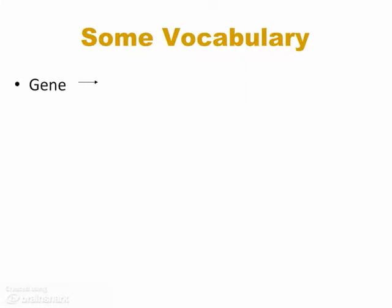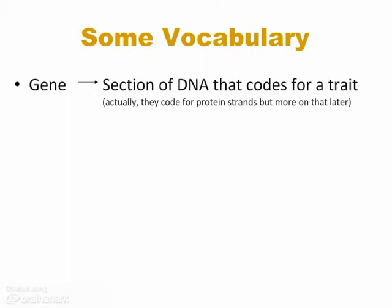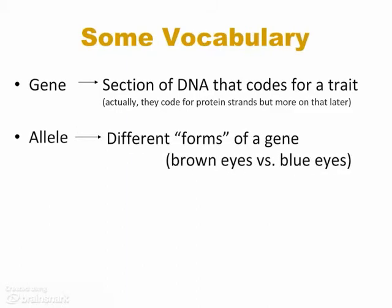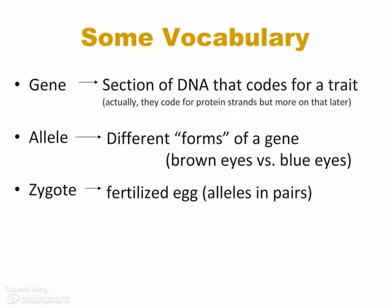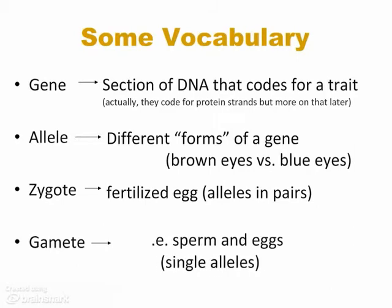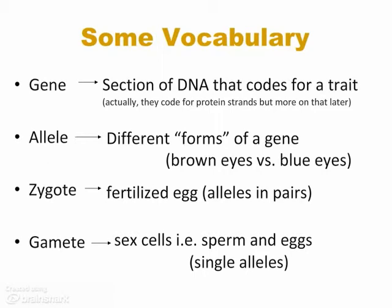To recap the important vocabulary we've covered: genes are sections of DNA that code for a particular trait — they actually code for proteins. Different proteins that different genes make can influence the same trait, like eye color. You can have a gene that codes for a protein that makes brown eyes and a different allele that codes for the lack of that protein, giving you blue eyes. In a zygote, alleles come in pairs, whereas in the gametes — the sperm and eggs — those alleles are single.